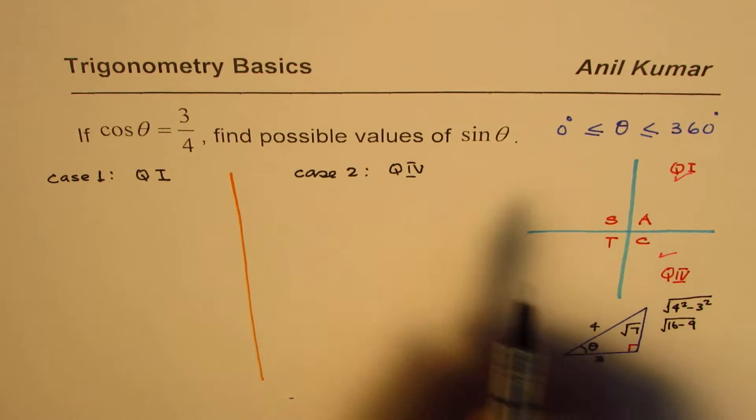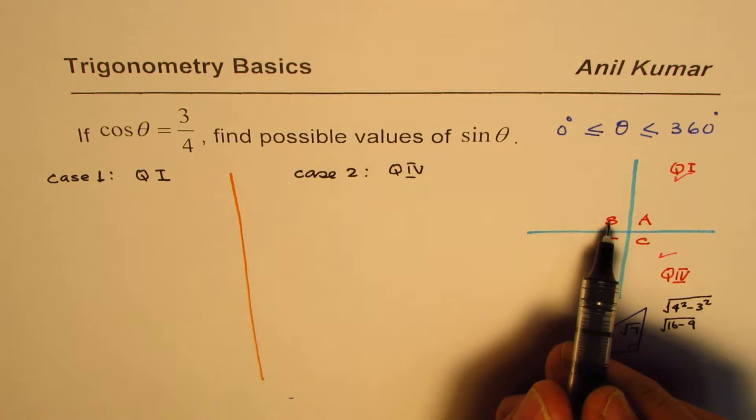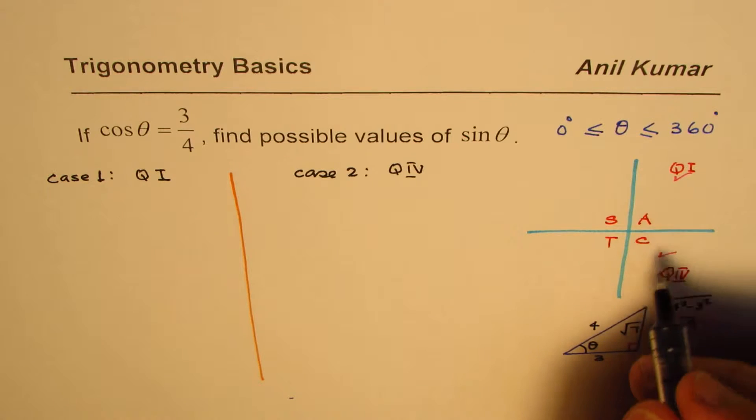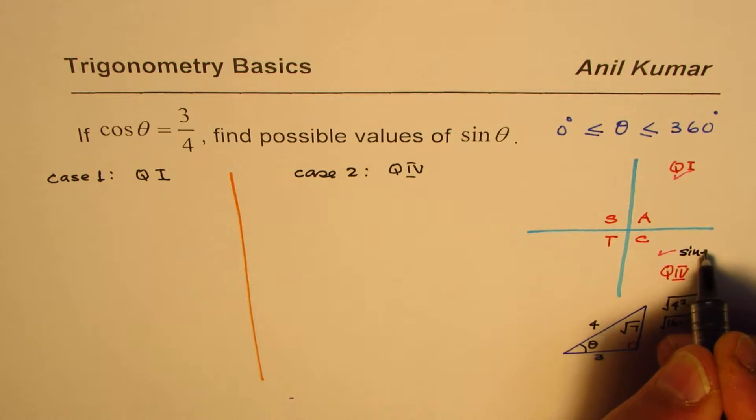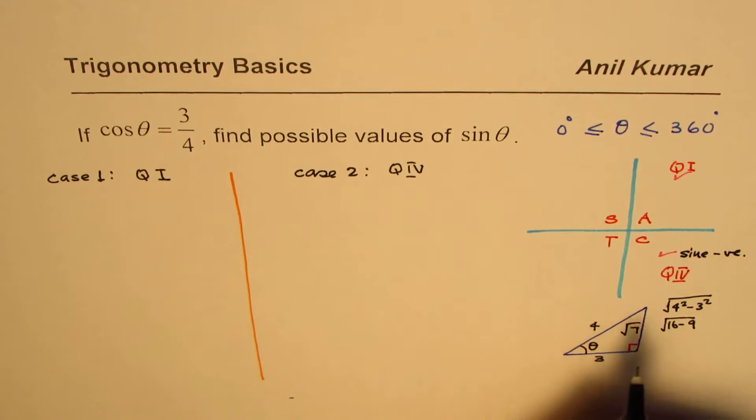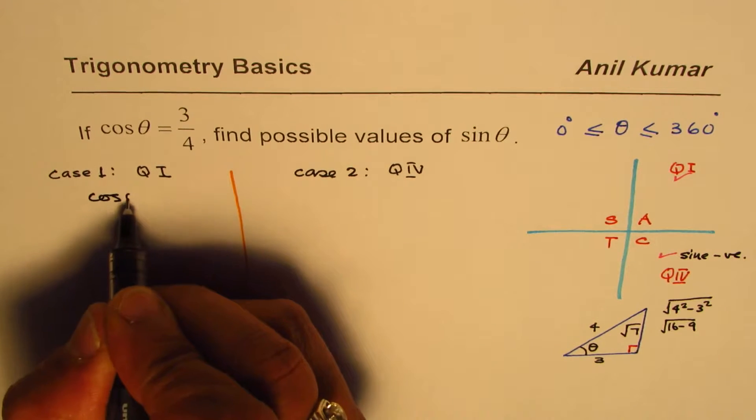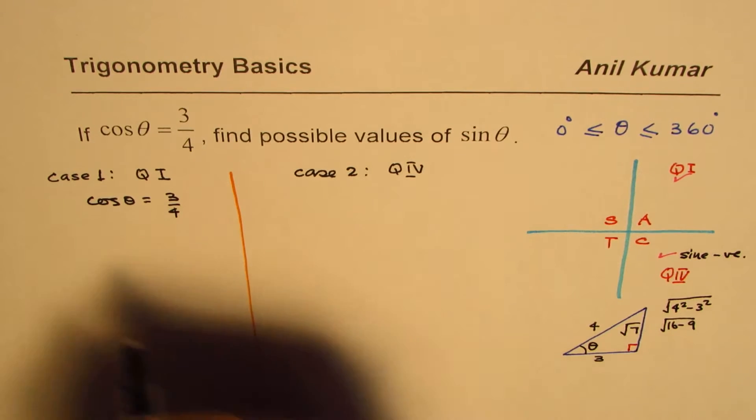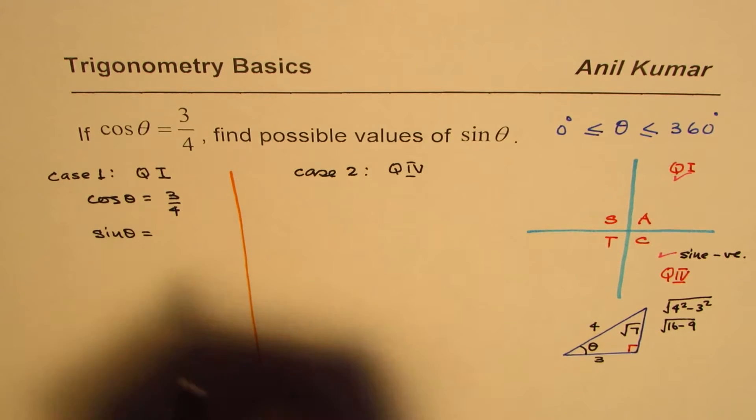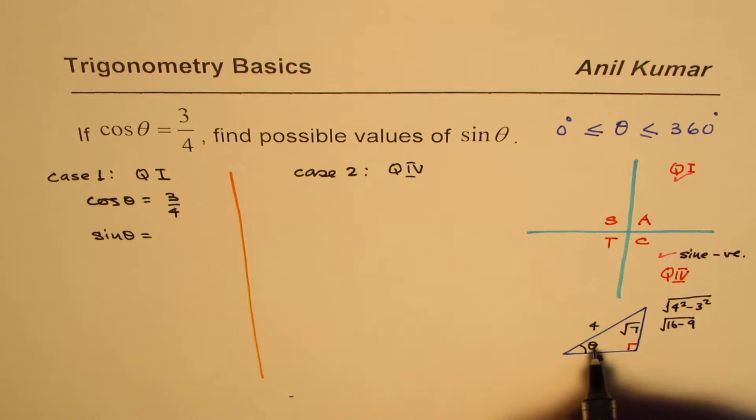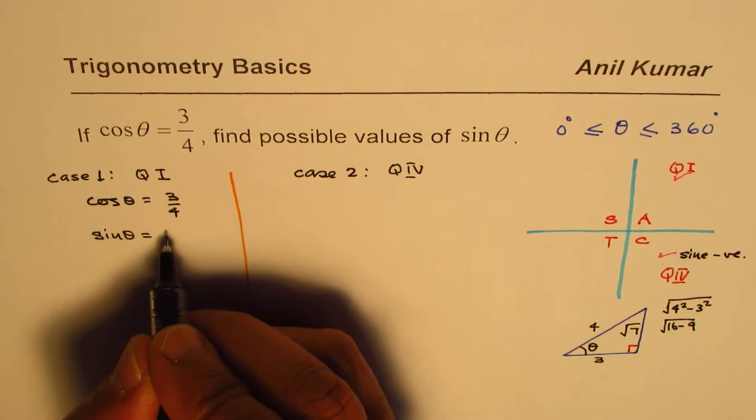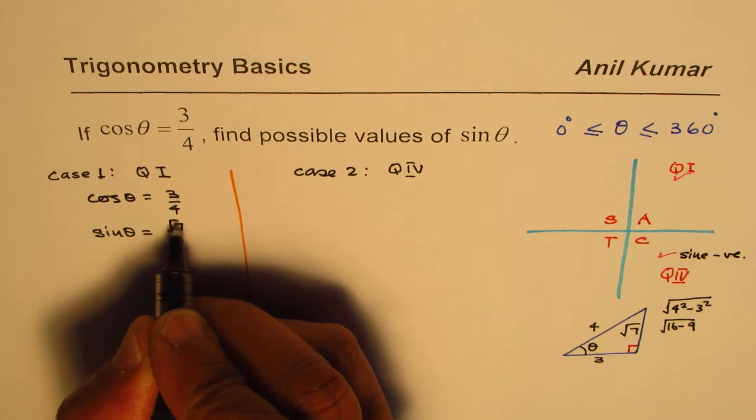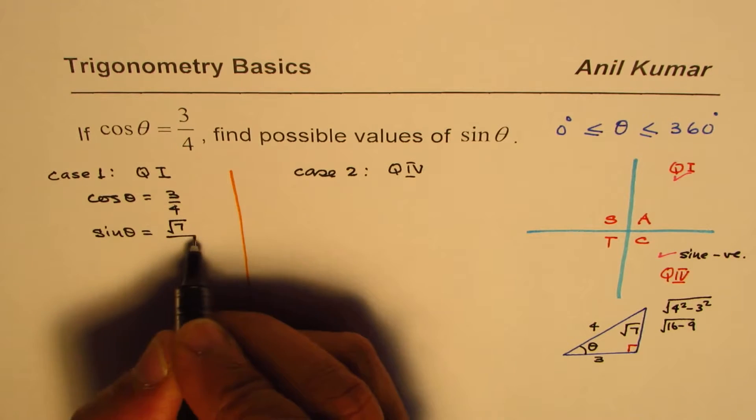Now if you are talking about sin theta, the sign is positive. All are positive here, but sin is negative in quadrant 4. So in case one where cos theta equals to positive 3 over 4, we have seen that sin theta will be equal to the opposite side, which is square root 7, over hypotenuse 4.